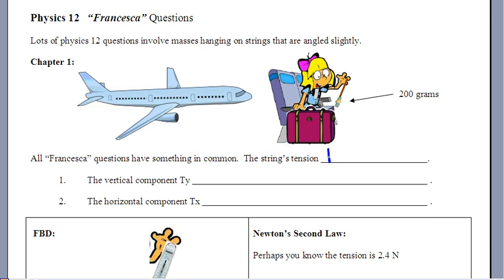It's going to be doing two different things at once. The vertical component, I'm going to call that T in the Y direction, tension in the Y direction. In all of our questions, we're going to see that it just holds something up.